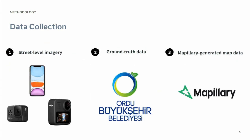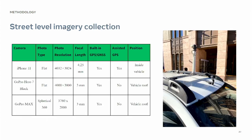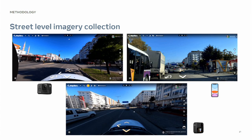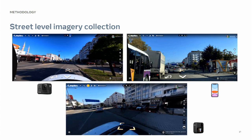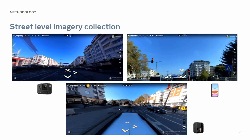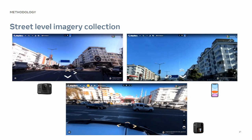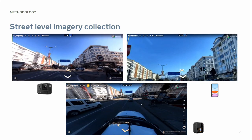Street-level imagery was collected with an iPhone 11, GoPro Hero, and GoPro Max. Ground truth data was provided by the municipality, and then images were uploaded to Mapillary and generated by Mapillary. GoPro Max is a 360-degree camera, which gives better visibility of the places, as you can see on the bottom side.